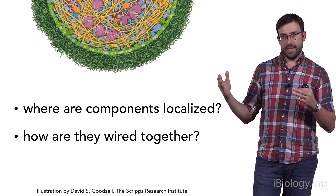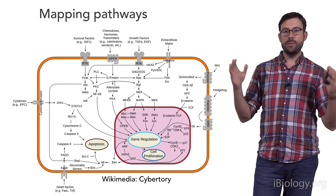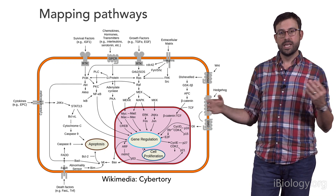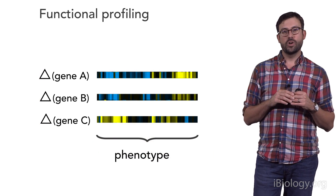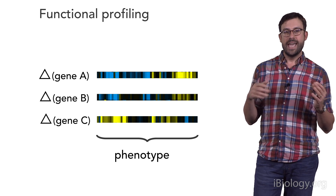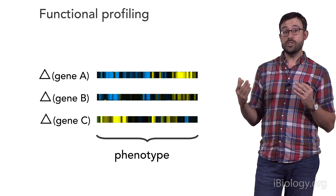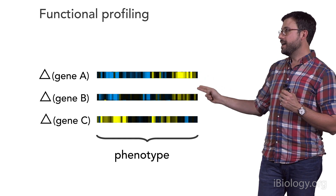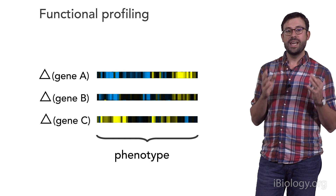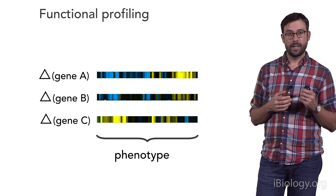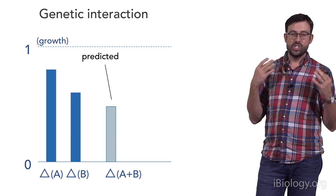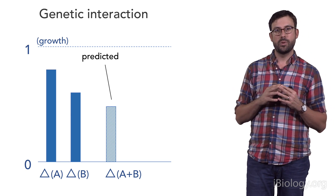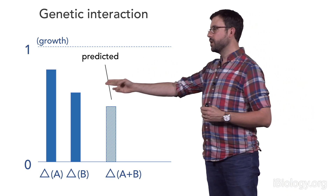Now, the final stage of understanding how a cell is wired is to put all of these functional units back into the context of functional pathways — for example, signaling pathways that shape cellular behavior. The method of choice is to turn genes off or on and measure how the cells react to it, clustering genes based on the similarity of their phenotypes. For example, if the loss of gene A and the loss of gene B elicit very similar phenotypes, it's likely that these genes are part of the same pathway. To take this further, we can study genetic interactions.